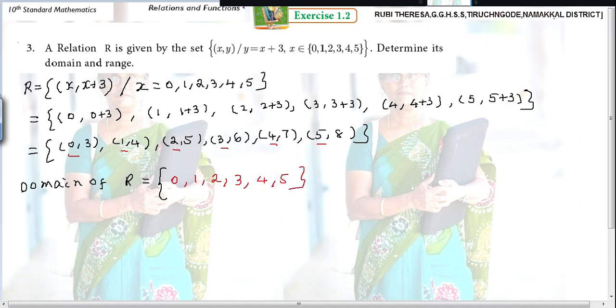Next one is range, range of R. What is range? The second coordinate elements. In the ordered pair, all the second coordinate elements of R. That means 3, 4, 5, 6, 7, 8, because it satisfies the condition x plus 3.